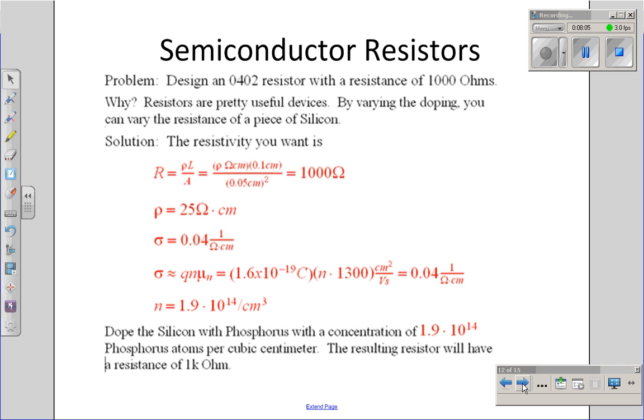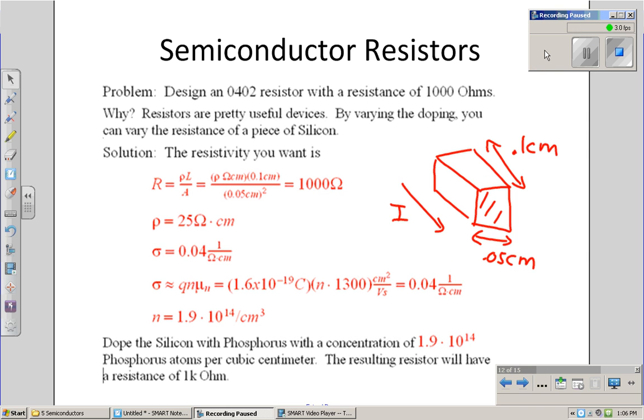So here's another problem. Suppose I want to design a resistor that's 1,000 ohms. I want the resistor to be an 0402 resistor, meaning I've got a piece of silicon that's 0.1 centimeter in length, 0.05 centimeters in cross-section. Find the doping that creates a 1,000 ohm resistor.